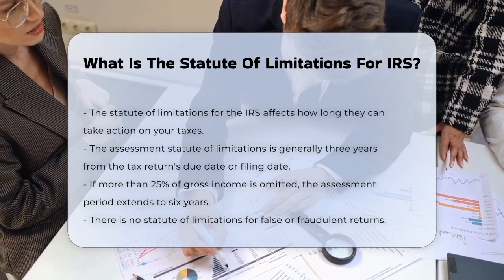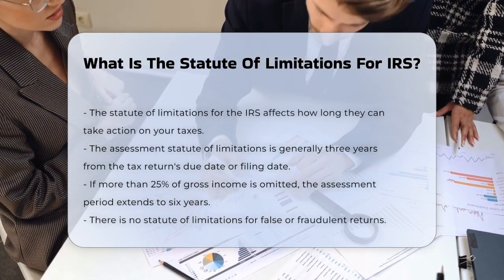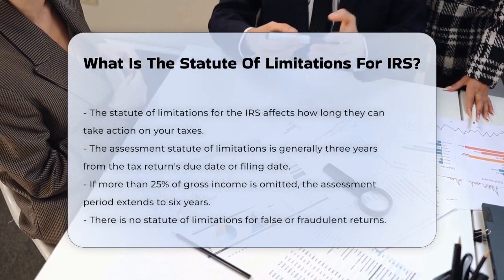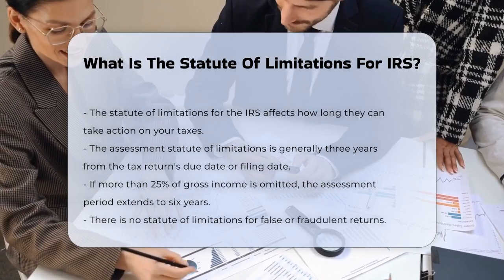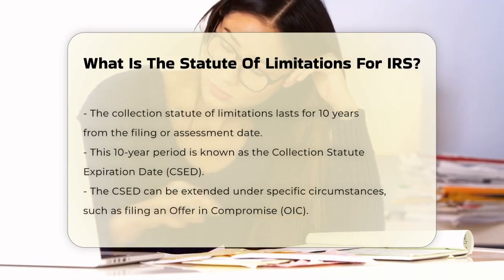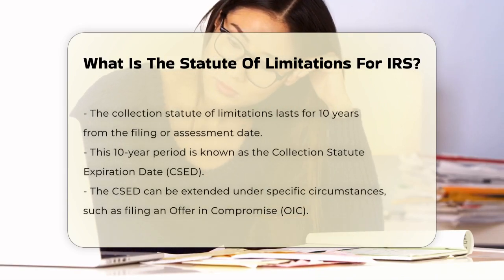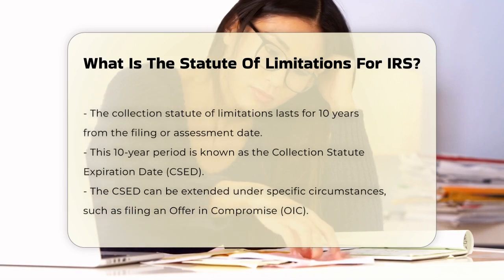However, there are exceptions. If you omitted more than 25% of your gross income from a tax return, the statute of limitations extends to six years. And if you filed a false or fraudulent return, there is no statute of limitations at all.